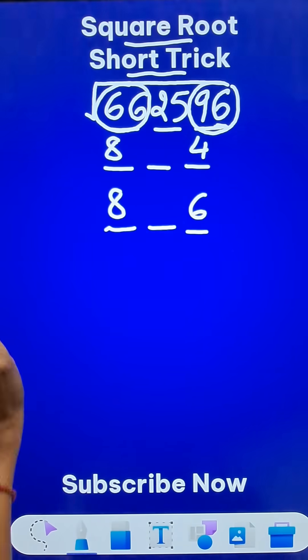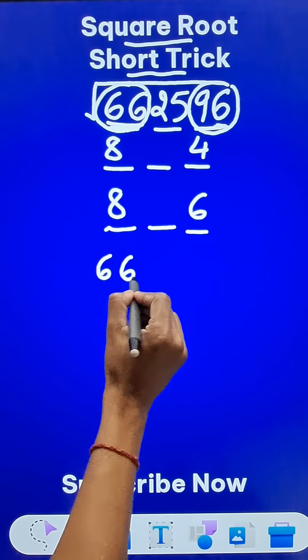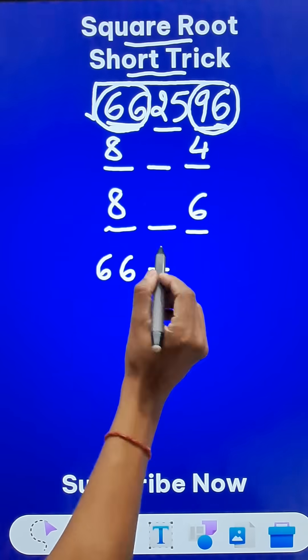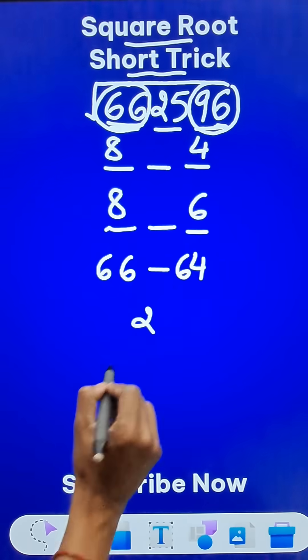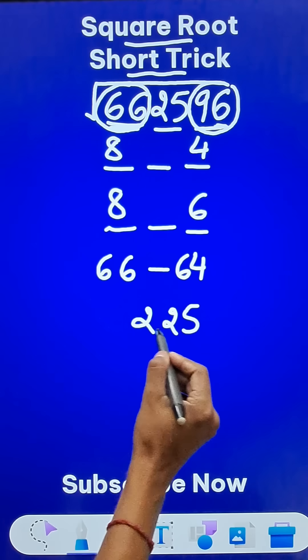Now the middle place, what do you have to do? Watch carefully. 66 was the first pair. And 66 minus this number, 8 square, is 64. And the difference gives you 2. The middle pair is 25, which you have to write along with this. So it becomes 225.